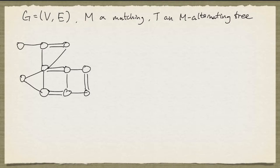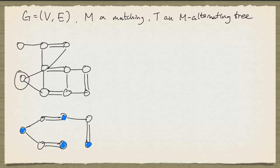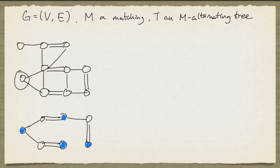Let us look at an example. This is our graph, and the matching edges are depicted by the double lines. Let's start building an M-alternating tree rooted at this node. We can add this pair of edges and mark the nodes in the even set with blue. Then we can add this pair of edges, then this pair, then this pair, and we stop here. Now we cannot easily identify an M-augmenting path using this tree, even though there is one — but it uses an edge not in the tree. And this tree is not frustrated either, because we have edges that join two nodes in the even set. So we are stuck.